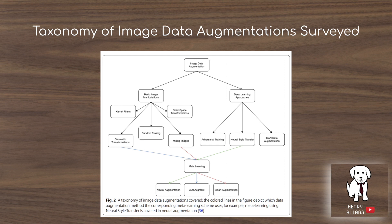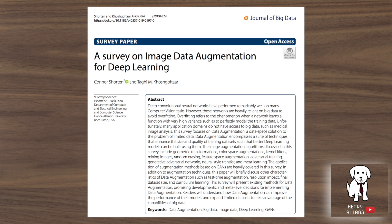To summarize, this is the taxonomy of image data augmentation surveyed in this paper: basic image manipulations, deep learning approaches, and meta-learning approaches that use controllers to search for augmentation parameters. Thanks for watching. Please subscribe to Henry AI Labs for more deep learning videos, and check out the paper 'A Survey on Image Data Augmentation for Deep Learning,' published in the Springer Journal of Big Data.